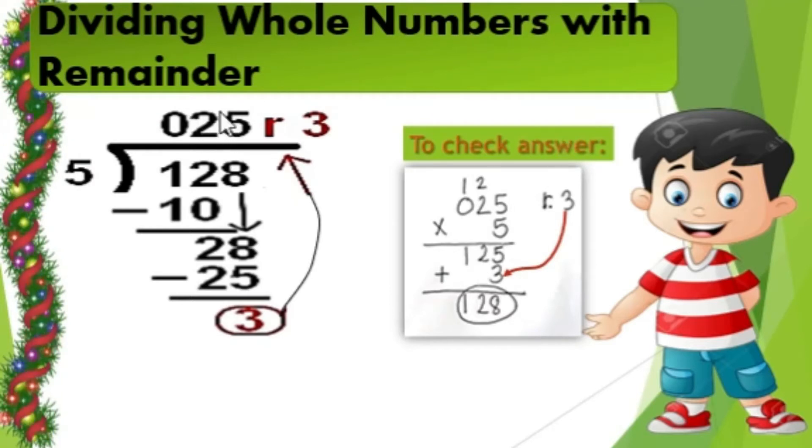The quotient 25 multiplied by the divisor 5 equals 125. Add the remainder 3 to get 128, which matches our dividend.